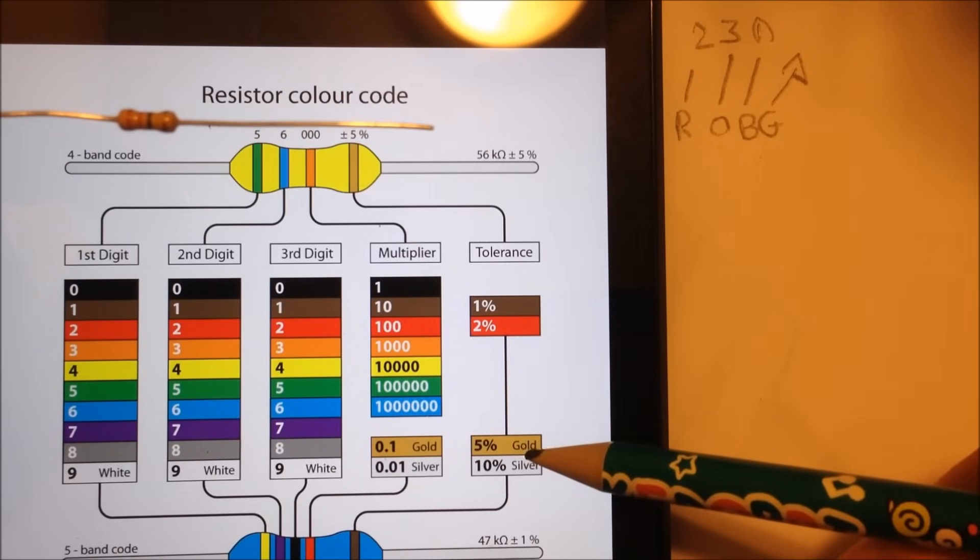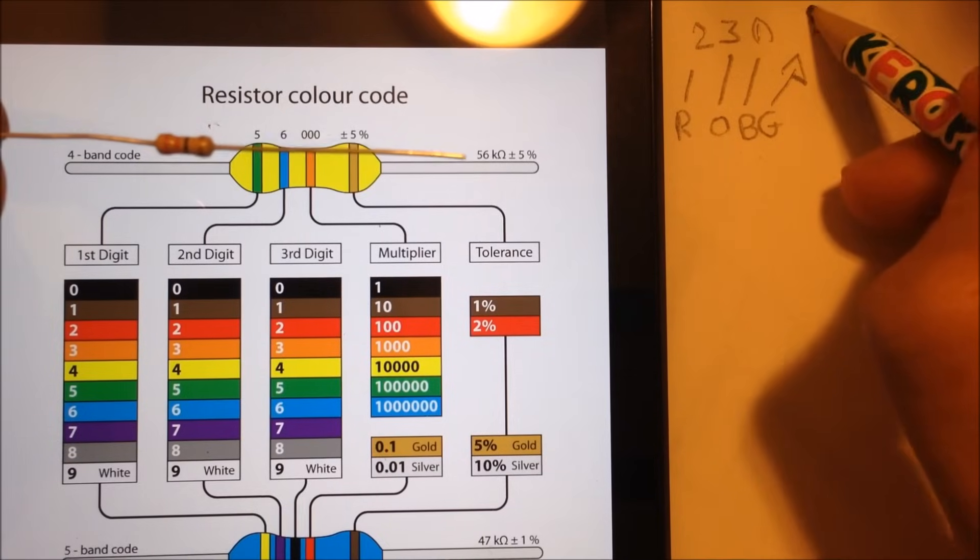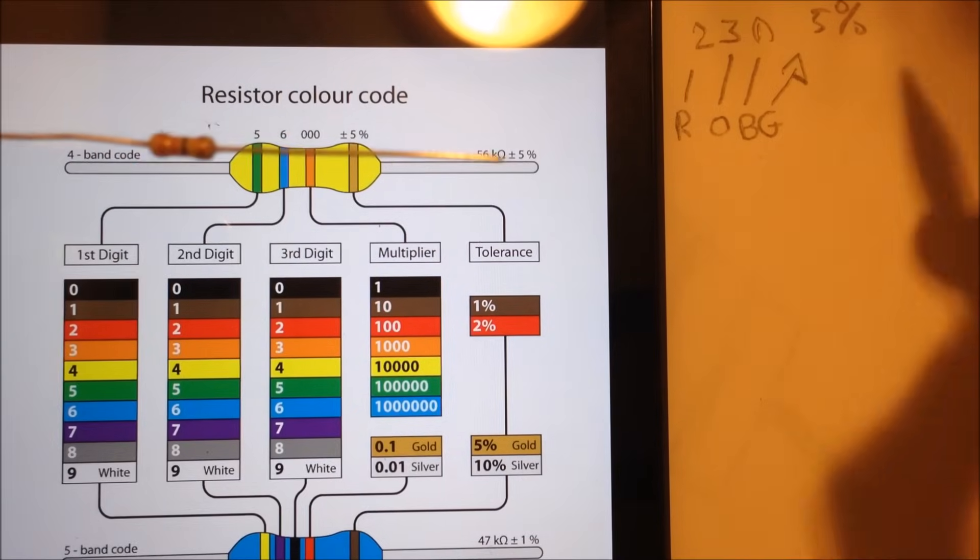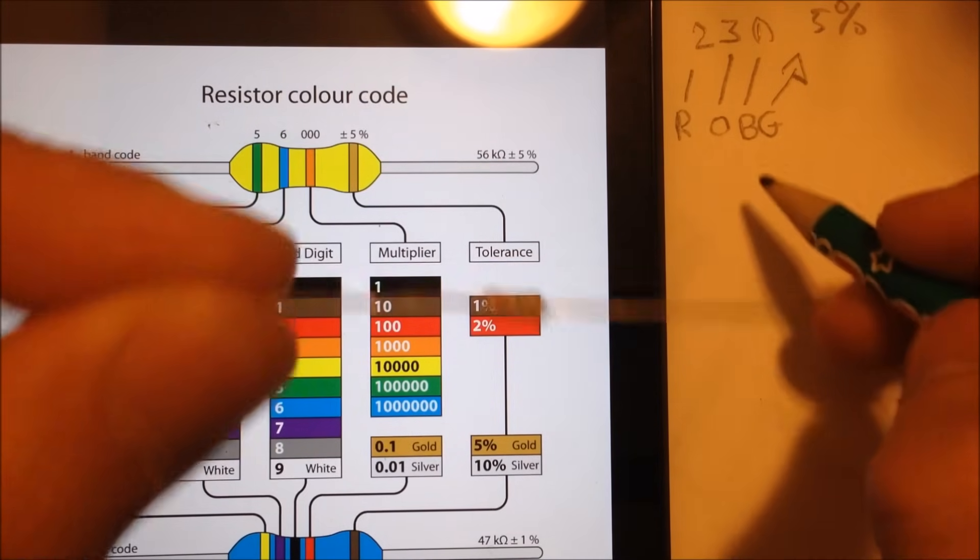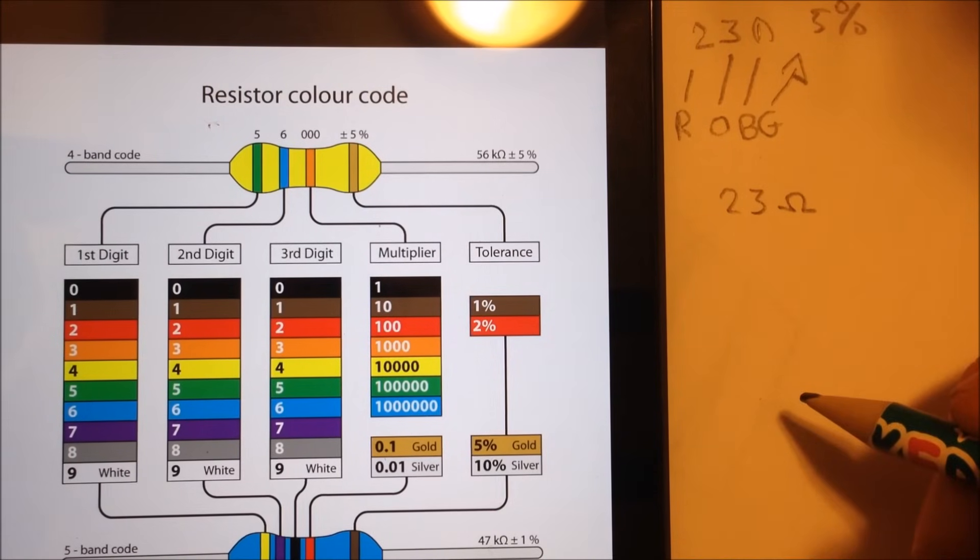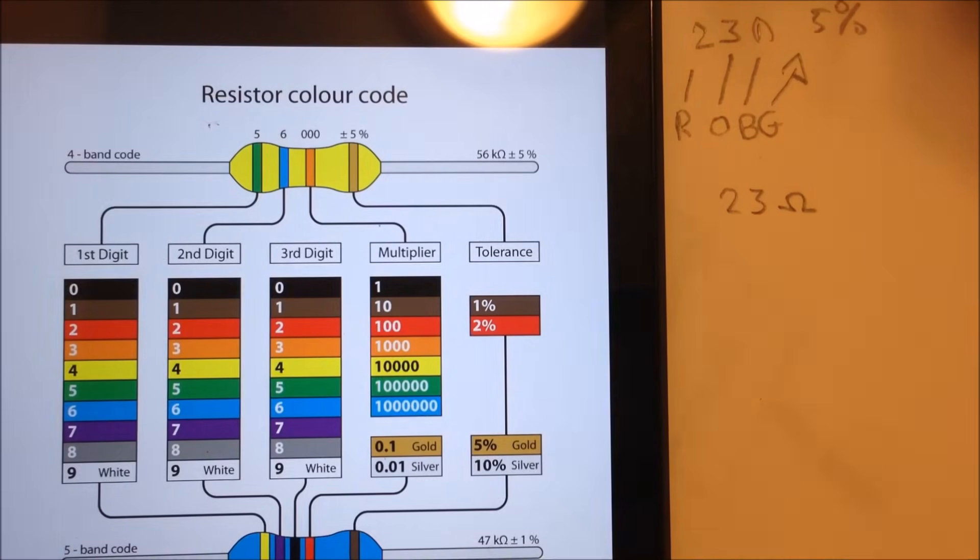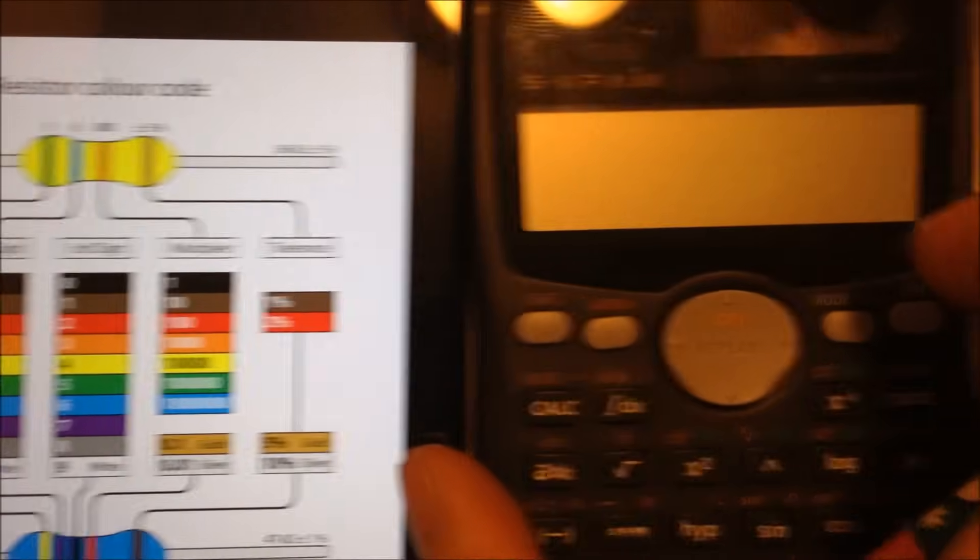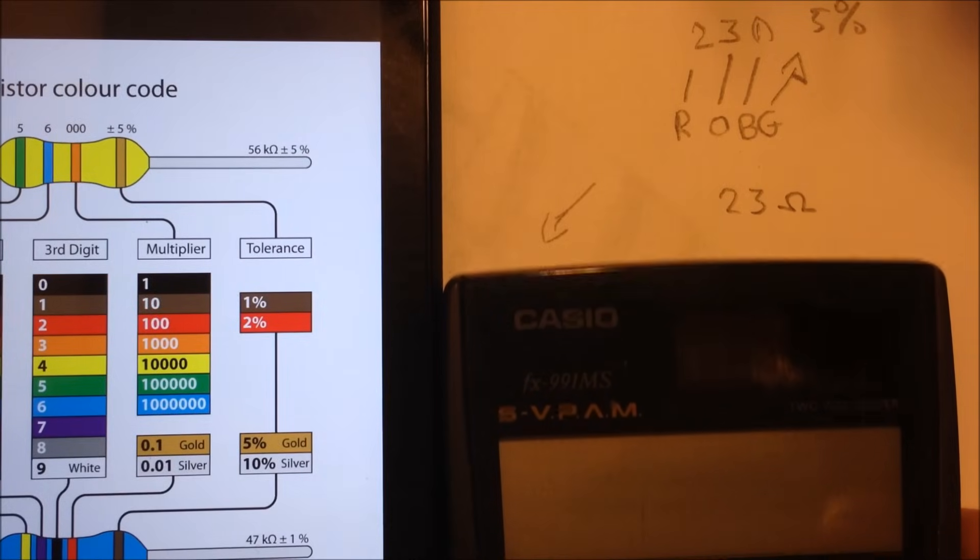Then our tolerance here, I said it's gold for this band here, and if you check here, the tolerance, gold is 5%. So we have a 5% tolerance. So that means, and this is all in ohms by the way, that this resistor here that I'm holding is 23 ohms. But all resistors are not perfect, and that's where the tolerance comes in.